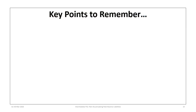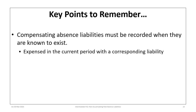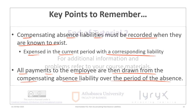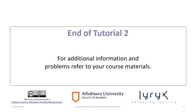Here are the key points to remember. First, compensating absence liabilities must be recorded when they are known to exist; they are expensed in the current period with a corresponding liability, and that liability is recognized at the time of the obligating event. Next, all payments to the employee are drawn from that absence liability account over the period of the absence. That concludes Tutorial 2 on non-accumulating paid absence liabilities.